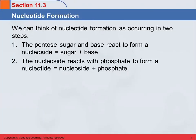So how do these form? We're not going to get into how they actually are formed in the body, but it's convenient to think of them as forming in two different steps. The first step would be that the pentose sugar and the base react to form a nucleoside. The nucleoside consists of the sugar — ribose or 2'-deoxyribose — plus one of those bases. That's called a nucleoside.